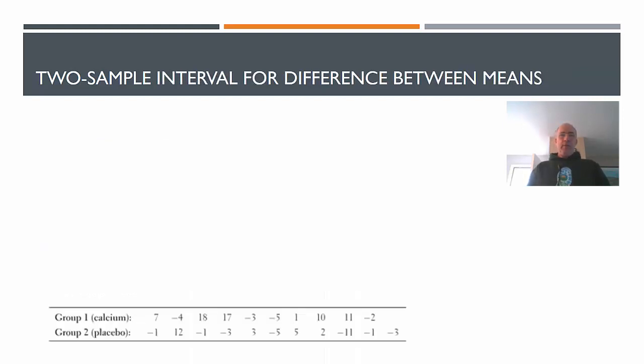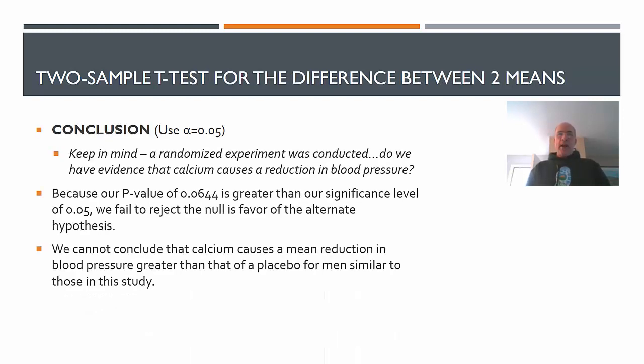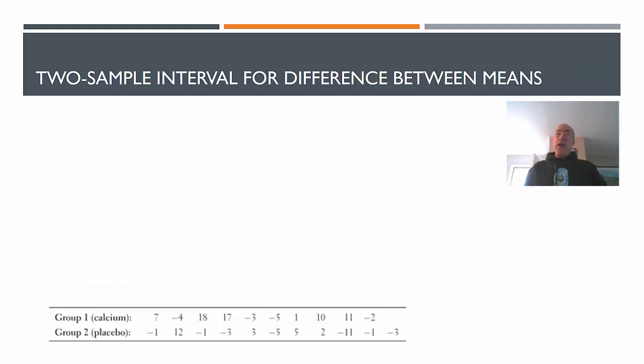So there's your conclusion. I'm flipping around a lot here, so take a minute to write the conclusion down. But now we're going to switch gears to a confidence interval. Let's do the same problem through a confidence interval approach and see if we can now estimate the difference. We're going to look at a two-sample interval for the difference between means. We're going to do a T-interval here. We'll use the same data as we did before.